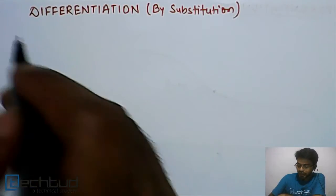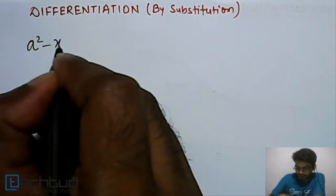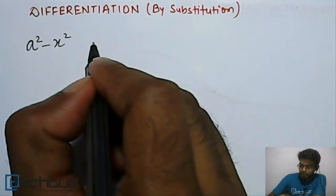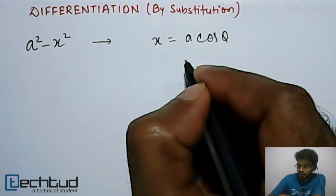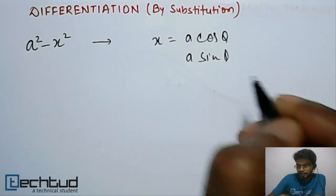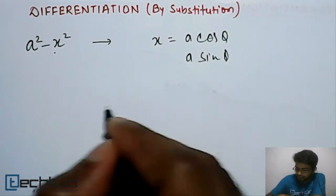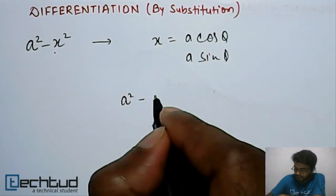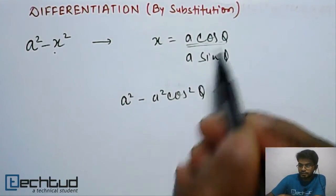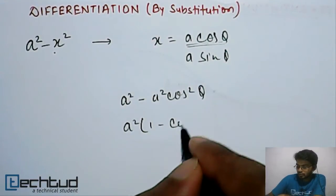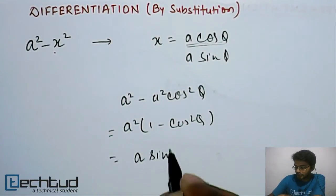I have some suggestions: if you have an expression of the form a²−x², then you can substitute x = a·cosθ or x = a·sinθ. If you substitute x by a·cosθ, the expression becomes a²−a²cos²θ, and taking out a², it becomes a²(1−cos²θ), which simplifies to a²sin²θ.